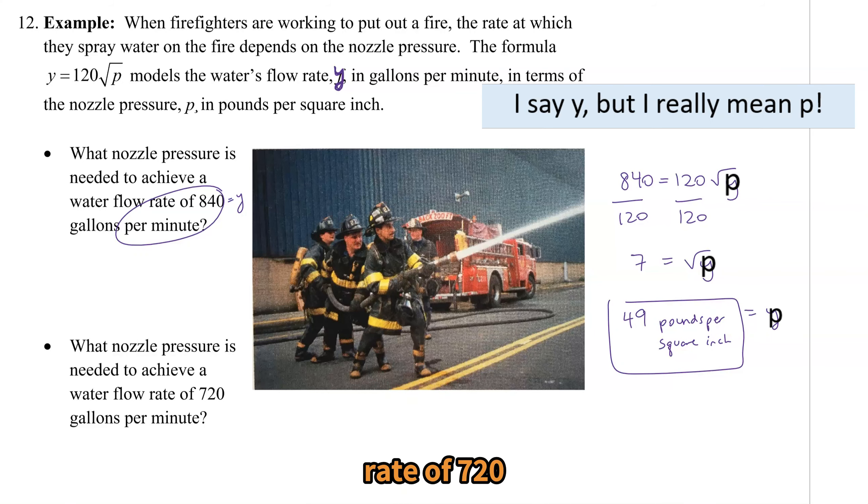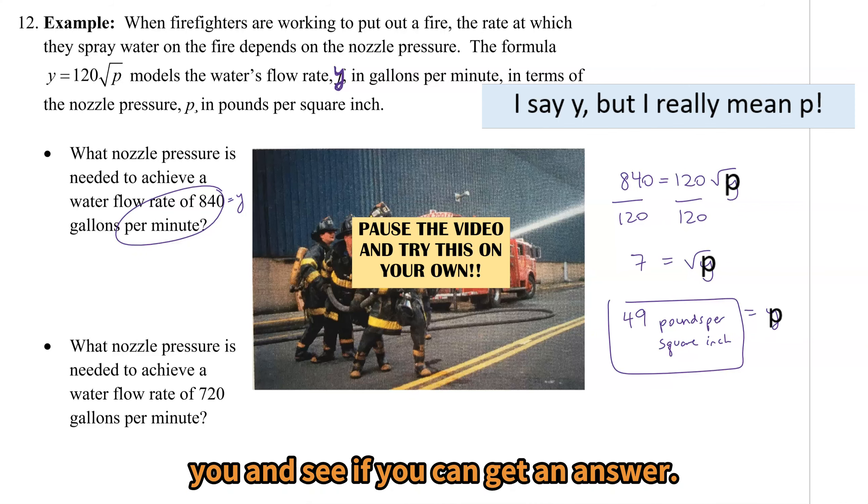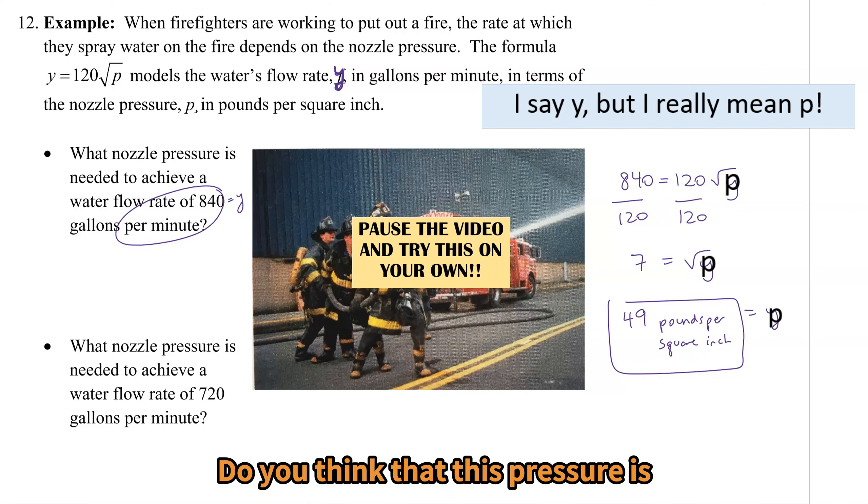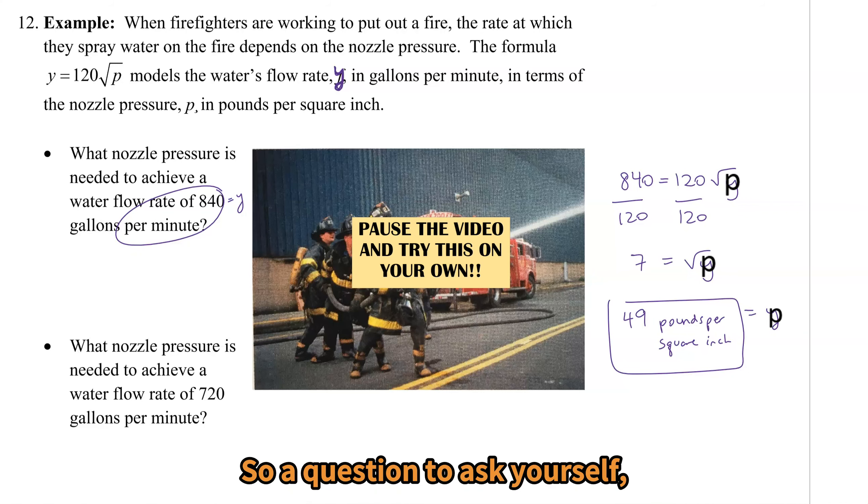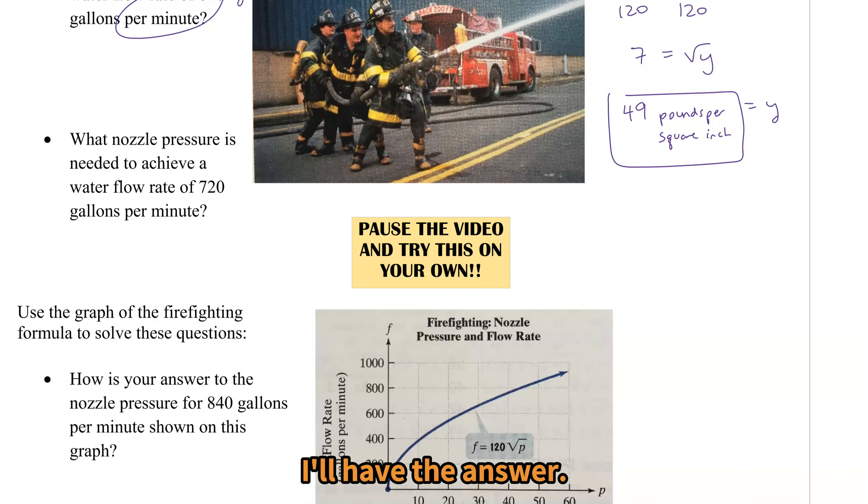What nozzle pressure is needed to achieve a water flow rate of 720 gallons per minute? I want you to try that one on your own. Pause the video and see if you can get an answer. I do have one question. Do you think that this pressure is going to be more than 49 pounds per square inch or less? And why do you think that? So a question to ask yourself and then try it on your own.